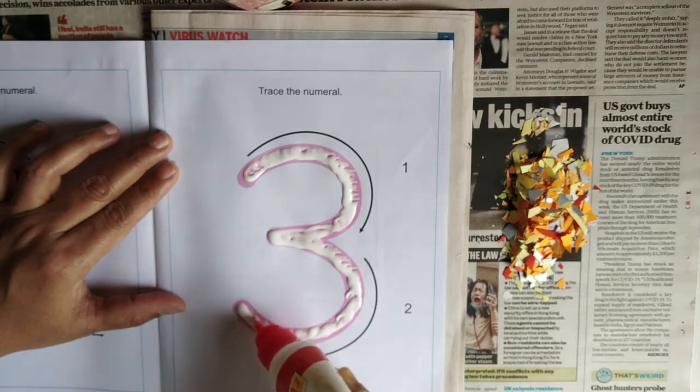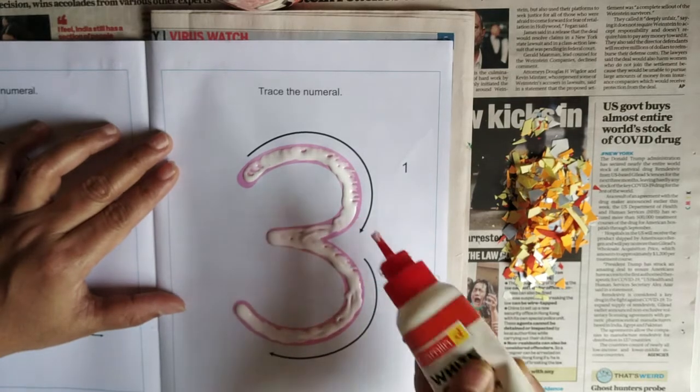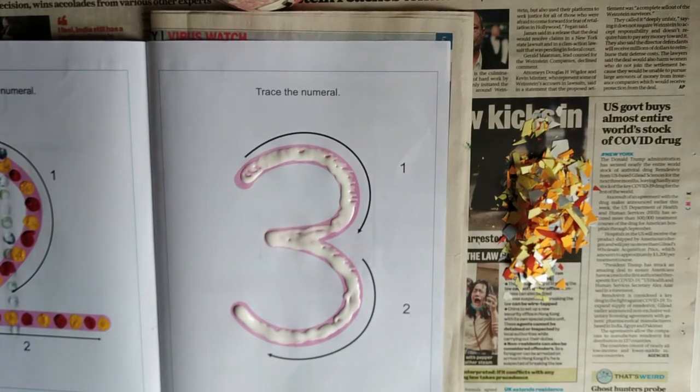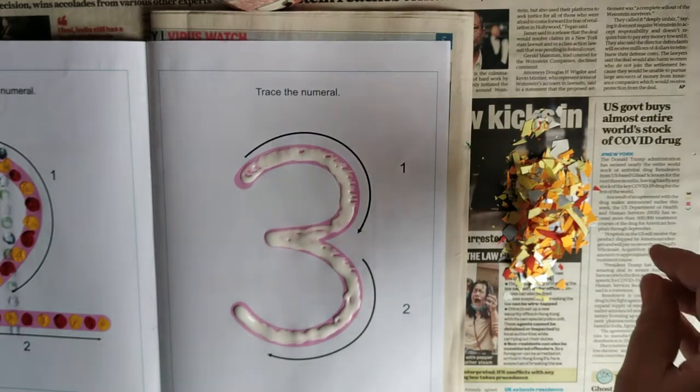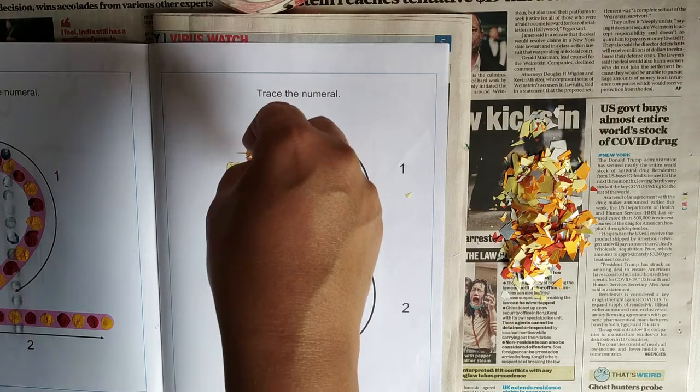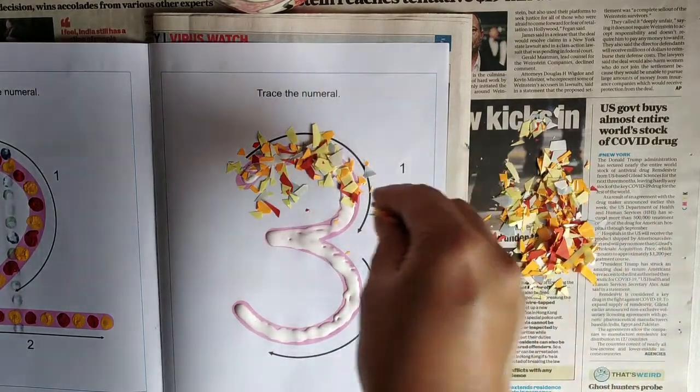Now the fevicol is ready. You are going to take all the pieces which you have torn and kept. You are just going to sprinkle on top over the fevicol. See how ma'am is doing? Just sprinkle, children.